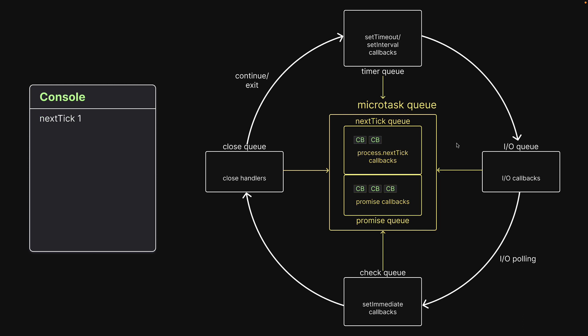The first callback is executed and the console.log statement logs the corresponding message. Next, the second callback is executed, logging the second log statement. This time the callback contains another call to process.nextTick, which queues up the inner nextTick log statement at the end of the nextTick queue. Node will then execute the third nextTick callback.